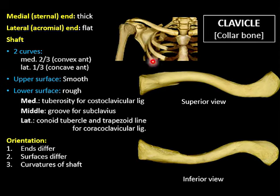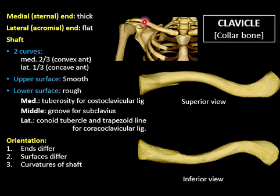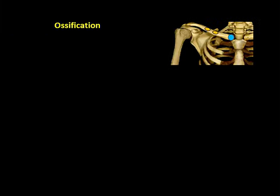To identify the side of the clavicle, compare the two ends: the medial end is quadrangular and the lateral is flattened. The upper surface is smooth and the lower is rough. For orientation, you need to know just one item from each of the three dimensions in space — medial versus lateral, above versus below, and anterior versus posterior. The ends tell you medial and lateral, the surfaces tell you above and below, and anteriorly the medial curve is convex while the lateral curve is concave.